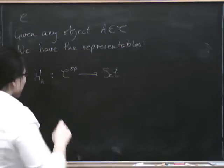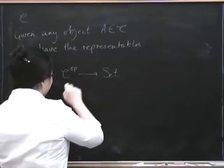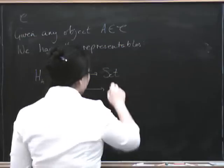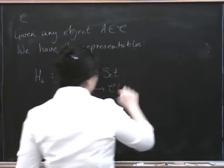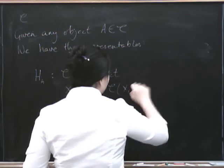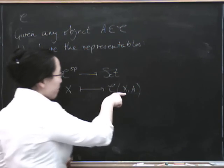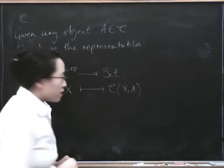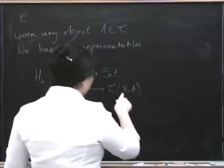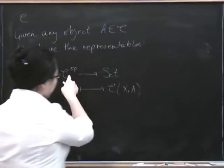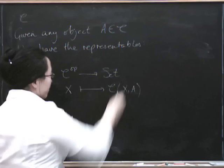What does it do? It's going to take any other object in C, let's say X, and it's going to send it to the hom set. So it's the set of morphisms from X to A. C has to be locally small to do this. Because X is in the first component here, this is op because it's op in the first component.